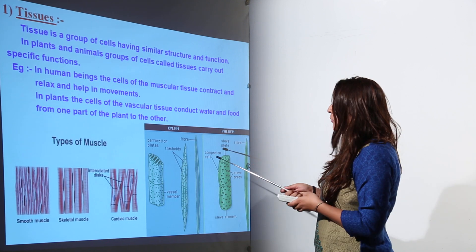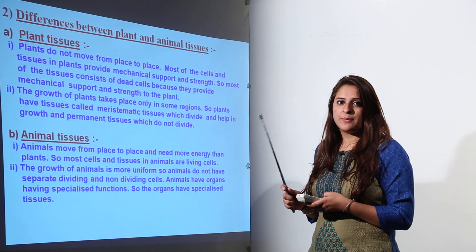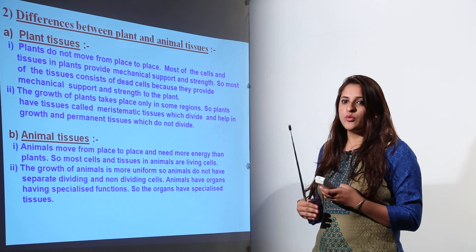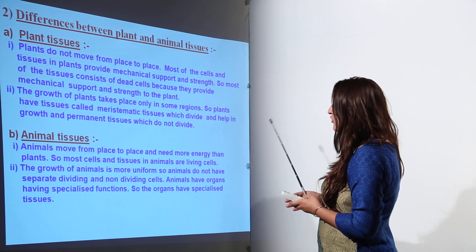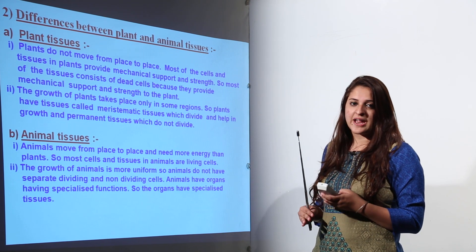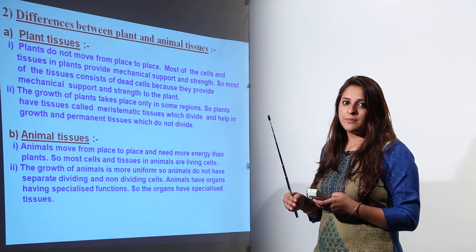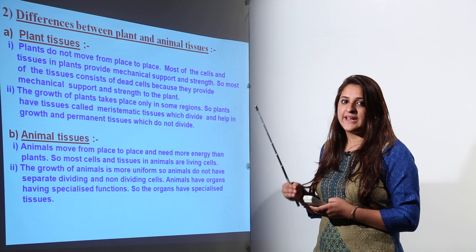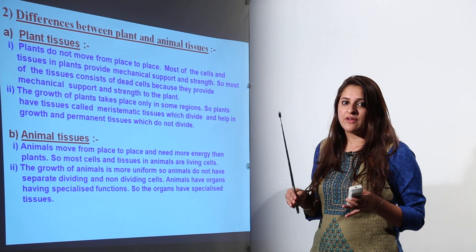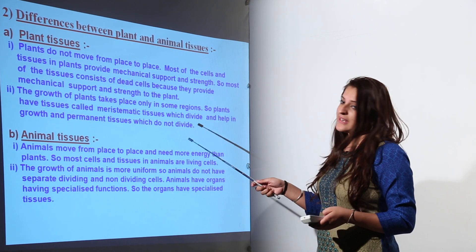What is the difference between plant tissue and animal tissue? Plant tissues do not move from one place to another, and most plant tissues are involved in providing mechanical support and strength to the plant. Therefore, most plant tissues will not be living — most of them will be dead cells, because they provide mechanical support and do not need to move.